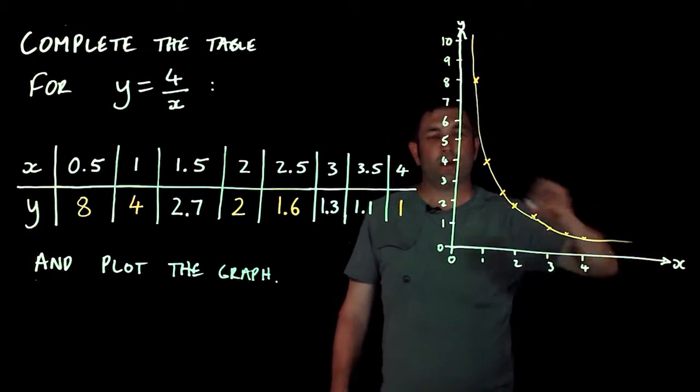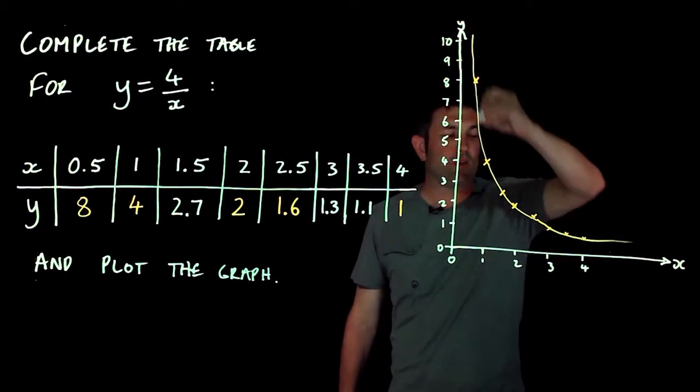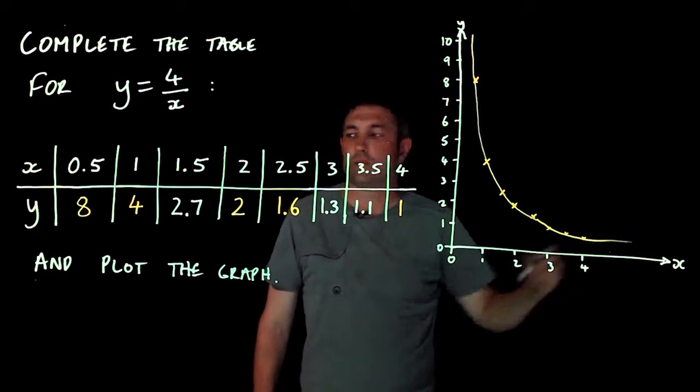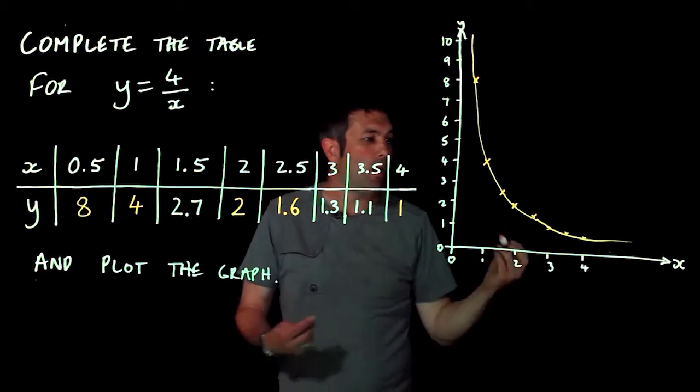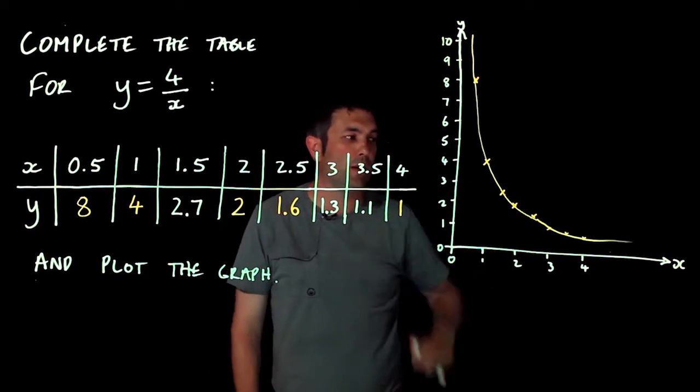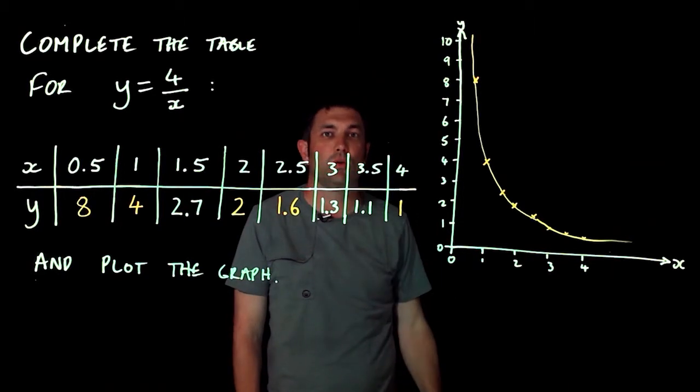So this I know because, and you'll get to know eventually, this is the right shape for a reciprocal graph, they all sort of look like that. So that's something to look out for, make sure you plot carefully with a cross and join up with a freehand line, not using your ruler.